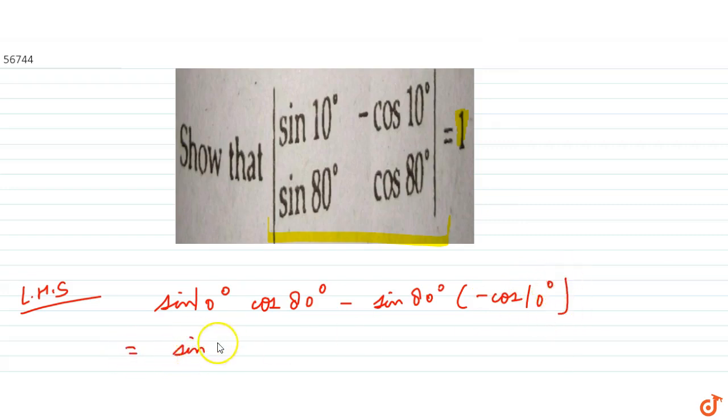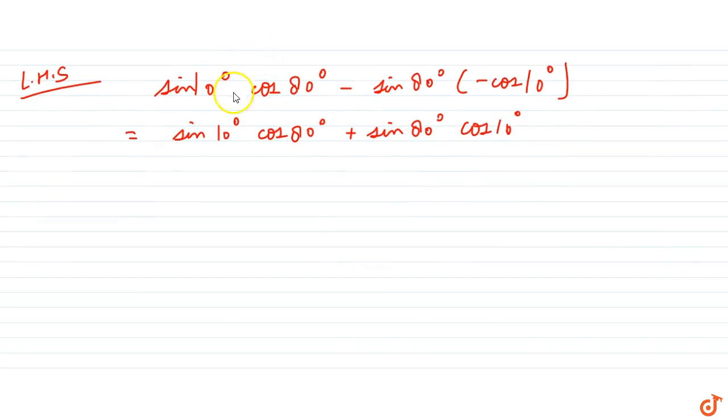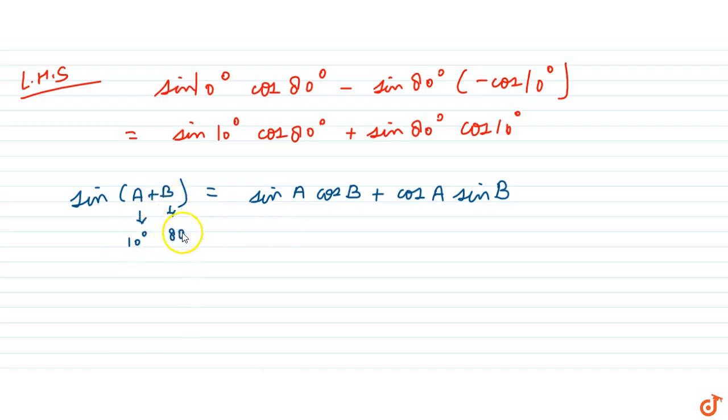This is equals to sine 10 degree into cos 80 degree plus sine 80 degree into cos 10 degree. Now see the formula for sine A plus B: we have sine A plus B as sine A into cos B plus cos A into sine B. So if we replace this A by 10 degree and this B by 80 degree,